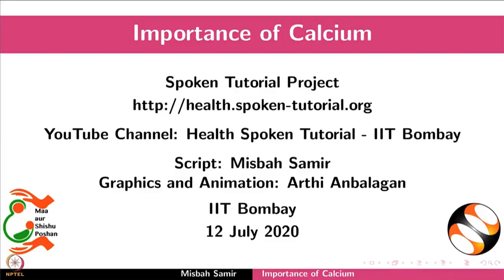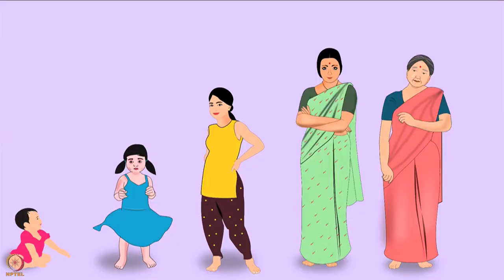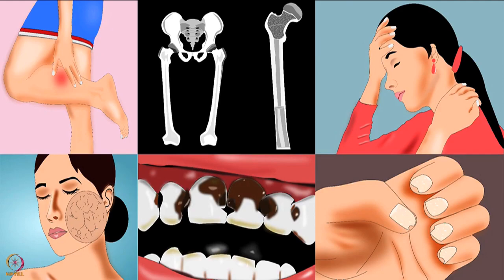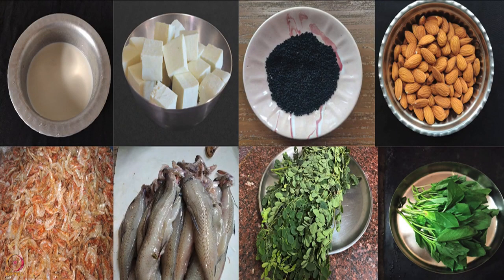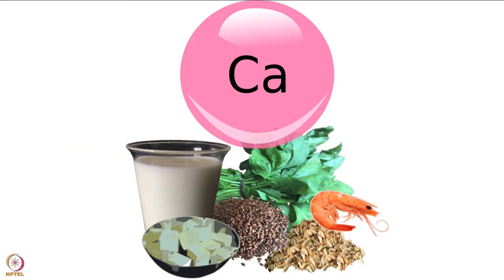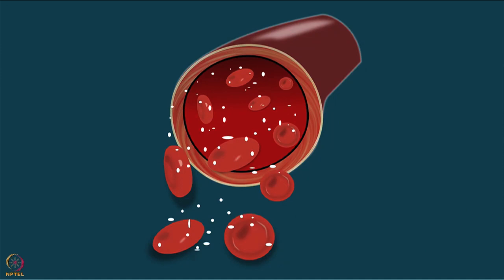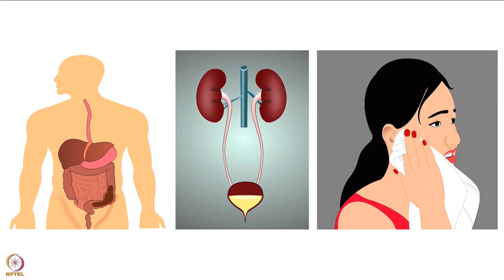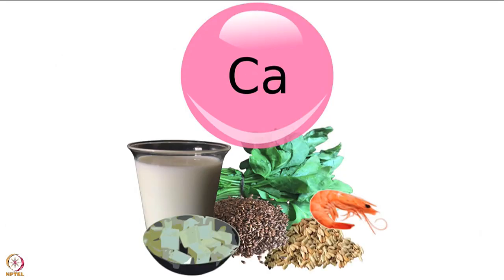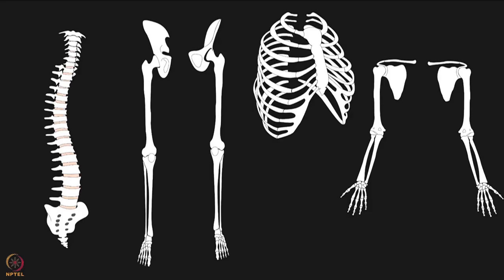Welcome to the spoken tutorial on the importance of calcium. In this tutorial we will learn about the role of calcium and its requirement in our body, symptoms of its deficiency, and calcium-rich food sources. Calcium is the most abundant mineral in our body — 99% is found in bones and teeth, and the remaining 1% is present in our blood. The key function of calcium is the development and maintenance of bones.